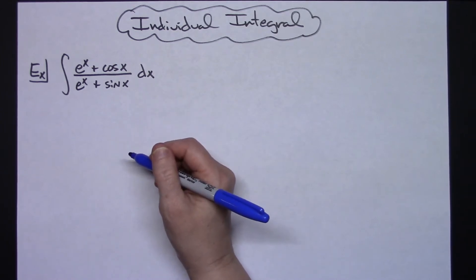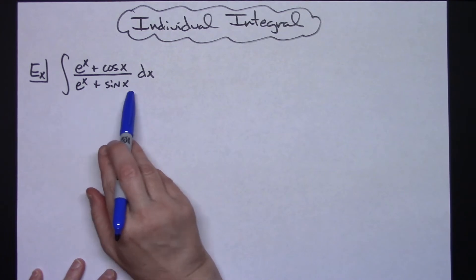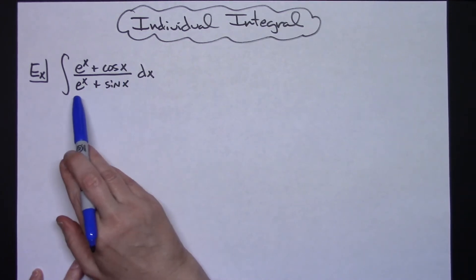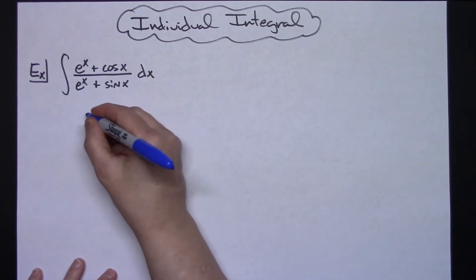This one is relatively straightforward. We're just going to use a u substitution. Taking a look at that denominator, we can see that when we take the derivative of sine we get cosine, and when we take the derivative of e to the x we get e to the x, which is going to make that numerator cross out.